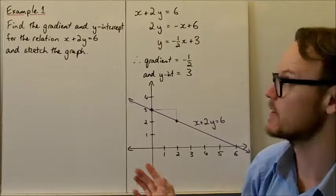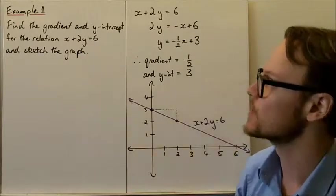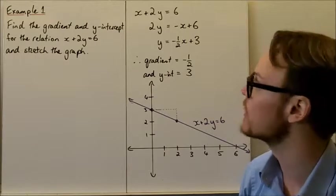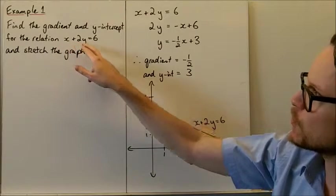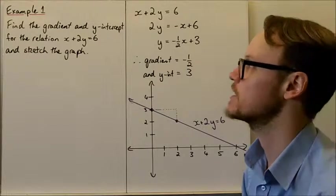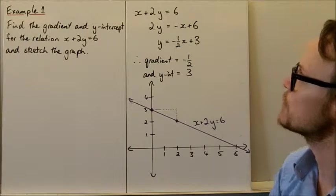For example here, we find the gradient and y-intercept of this relation, then sketch the graph. This isn't in the format of y equals mx plus c, so we need to rearrange it using algebra.